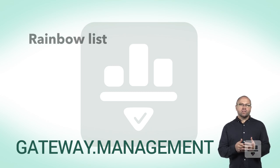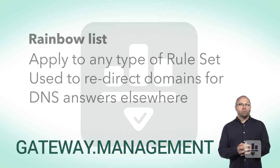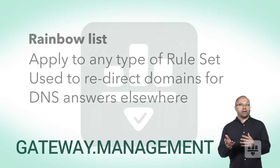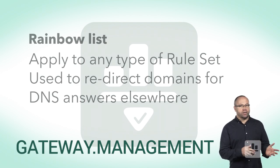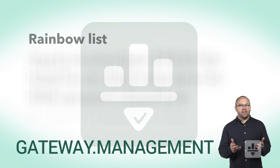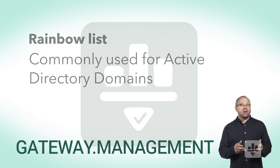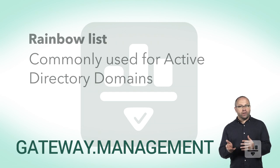Rainbow lists also apply to any rule set. You will use this type of list to redirect domains for DNS resolution to an alternate DNS server. The typical use case for this is an active directory, where you want AD authoritative domains forwarded to the AD servers.